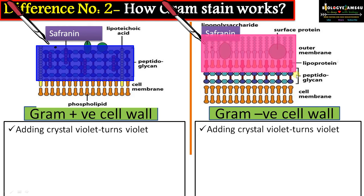Whereas in gram negative bacteria the outer membrane is made up of lipopolysaccharide. The crystal violet stain is attached to this outer membrane, and since lipopolysaccharide is a lipid it gets dissolved on alcohol treatment. Therefore alcohol de-stains gram negative bacteria, and we need a counter stain like safranin to further visualize it.